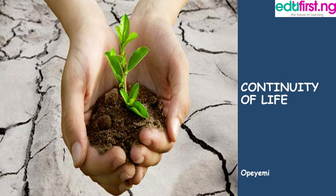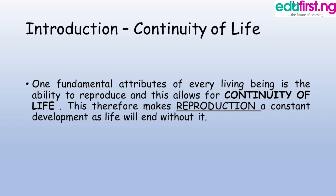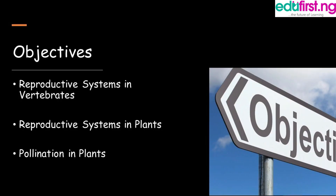Hi everyone. Today we'll be looking at continuity of life. It is important for us to note that the only guarantee for continuity of life is through reproduction, which makes reproduction a constant development in living beings. Our focus today will be on reproductive systems in invertebrates, reproductive systems in plants, as well as pollination in plants.